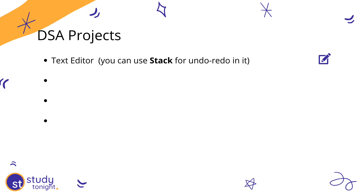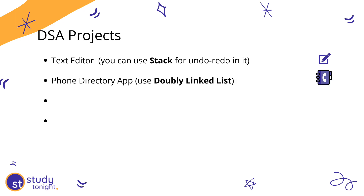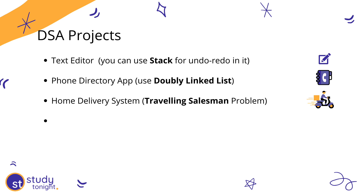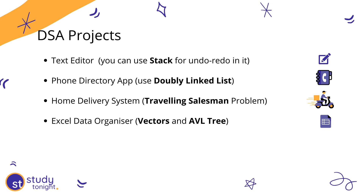To name a few DSA projects: a text editor where you utilize a stack to add undo functionality; a phone directory application using a doubly linked list; a home delivery management system — a somewhat complicated project that can be implemented using the traveling salesman problem with features like estimated distance, time, and cost; and an Excel data organizer using vector, string, and AVL tree. There are many more — you can Google DSA projects. If you want me to prepare a list and share a video on DSA projects with code from GitHub, let me know in the comments.